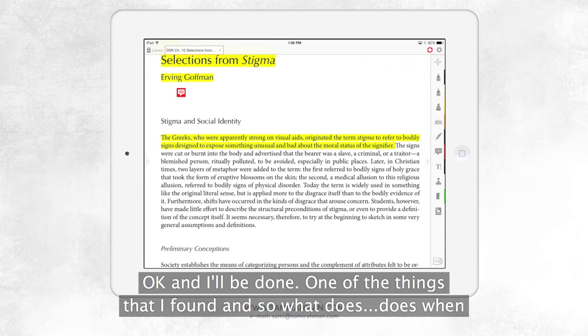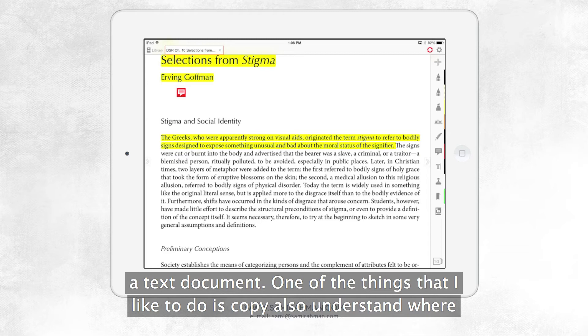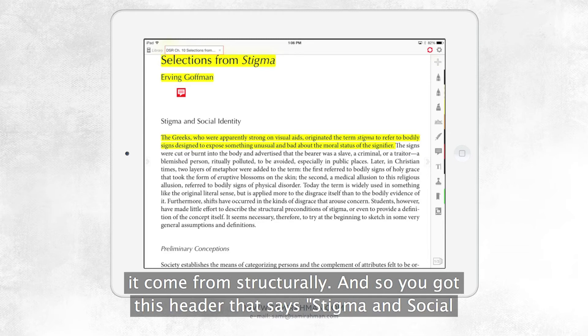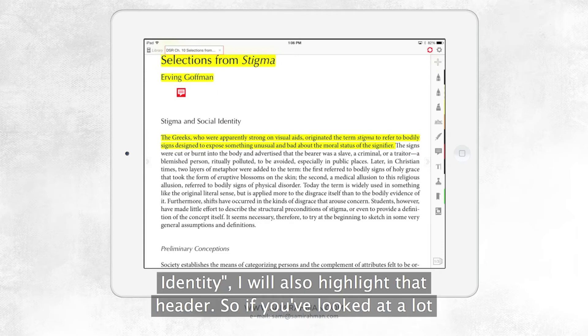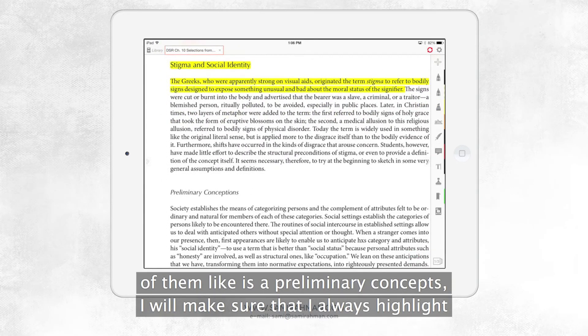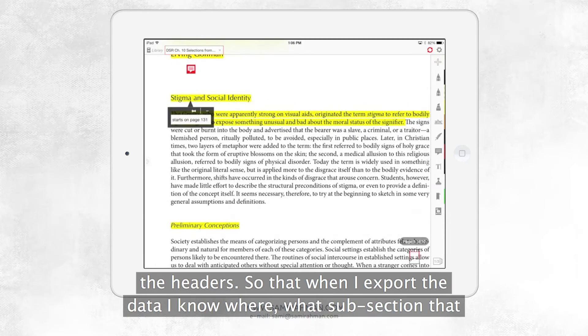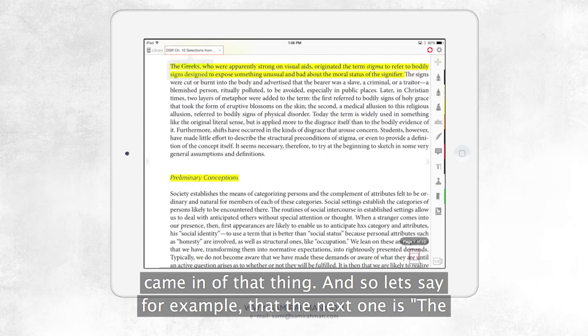One of the things that I found, and I'll show you how to do this, you can copy and paste all of these notes out into a text document. But one of the things that I like to do is also understand where it came from structurally. And so you've got this header that says stigma and social identity. I will also highlight that header. So if you look at a lot of them, like this is preliminary concepts, I will make sure and I always highlight the headers so that when I export the data, I know what subsection that came in.